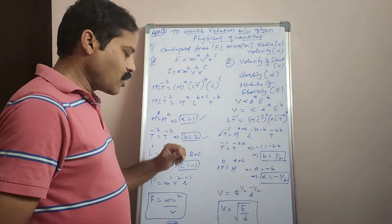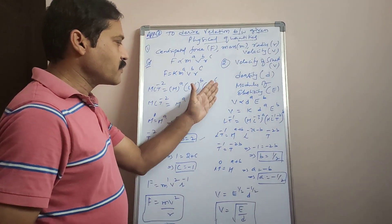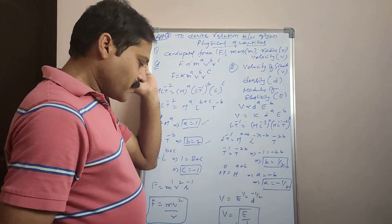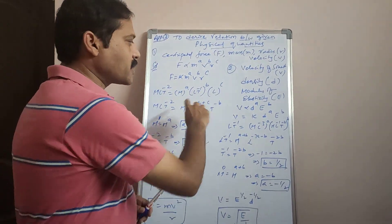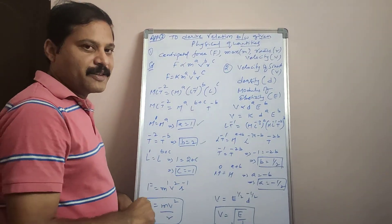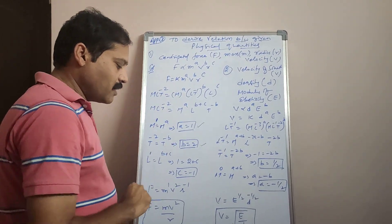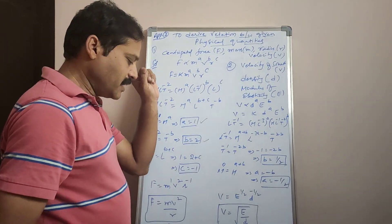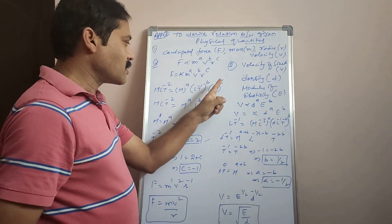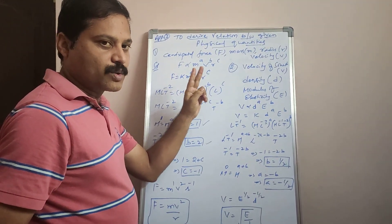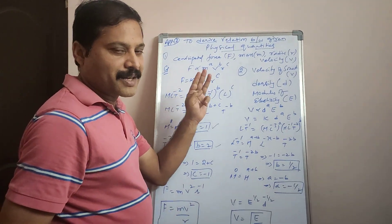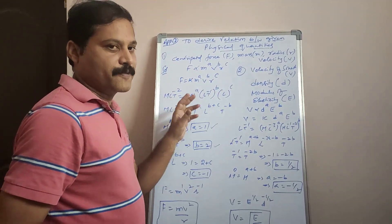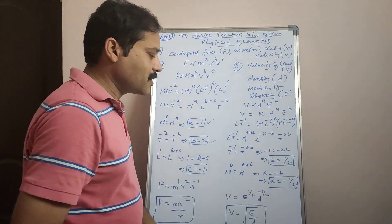Third, this method is not applicable to equations involving trigonometric functions, logarithmic functions, or exponential functions. Fourth, it is not applicable if the equation has some combination of more than two physical quantities. To summarize the limitations: not applicable for dimensionless constants, not applicable for equations with more than two terms, not applicable for trigonometric, logarithmic, and exponential terms, and not applicable for equations involving more than two physical quantities.